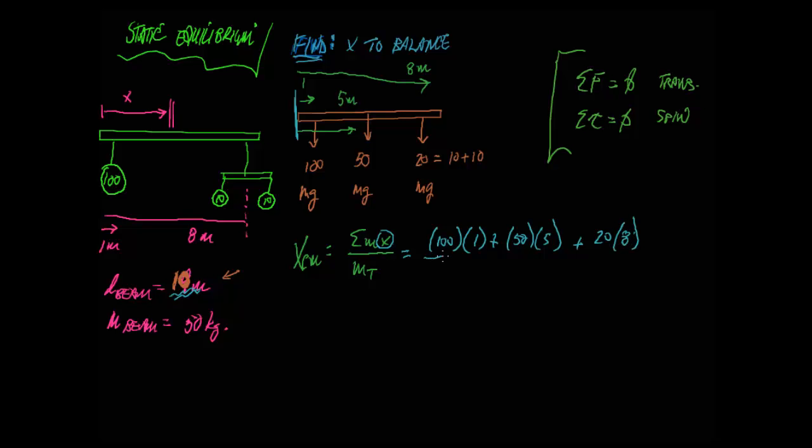So going from left to right, we're going to have the 100 acting a distance of 1 meter plus the 50 of the beam acting at 5 because it's in the middle of this 10-meter beam plus the 20 acting at 8. Again, the beam doesn't know it's split up into two 10s. It just knows it's a 20. That's over all of them,